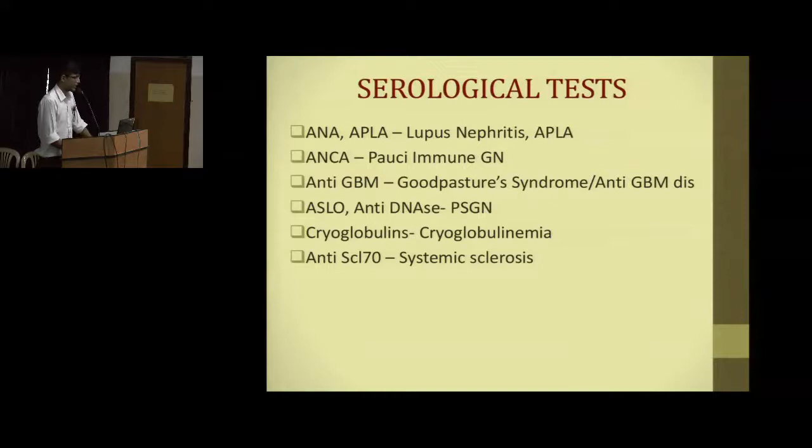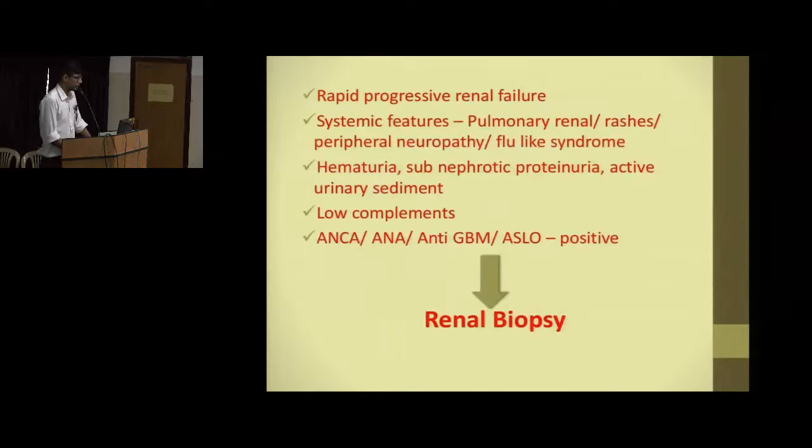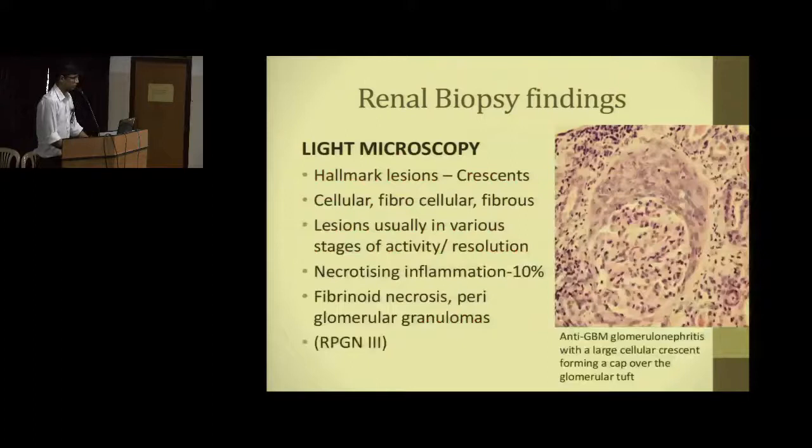Serological tests including ANA, APLA, ANCA, anti-GBM antibodies, ASLO titers, cryoglobulins, and anti-dsDNA can all be sent. Finally, a renal biopsy is needed to identify the histopathological variant of glomerulonephritis.